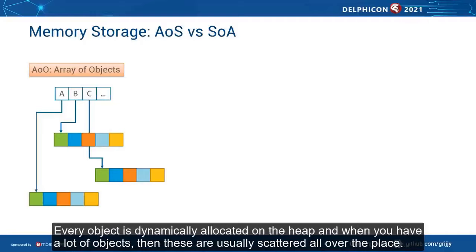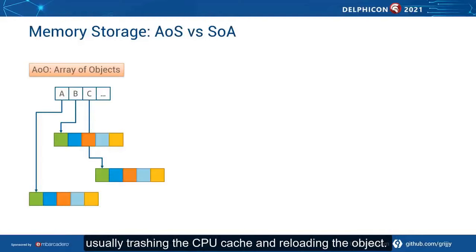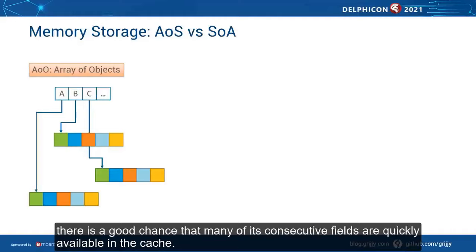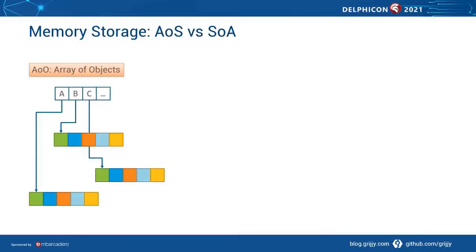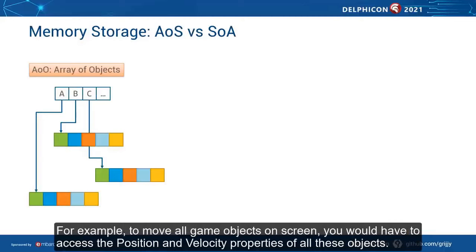Another advantage of ECS has to do with how data is stored in memory. On modern CPUs, the way you use the CPU cache has a big impact on performance — you get the best performance when the data you access is in this cache. Traditional object-oriented models aren't always CPU cache friendly. Every object is dynamically allocated on the heap, and when you have a lot of objects, these are usually scattered all over the place. When you have an array of objects, these need to be loaded from different memory addresses, usually trashing the CPU cache. In many game-like scenarios, you need to access the same properties of multiple objects over and over again.